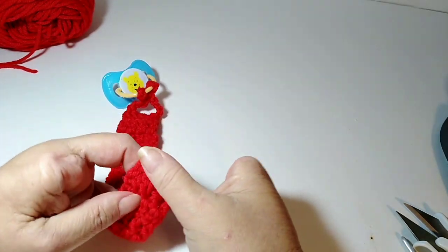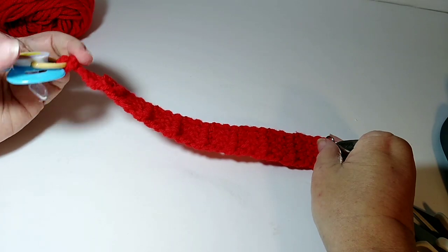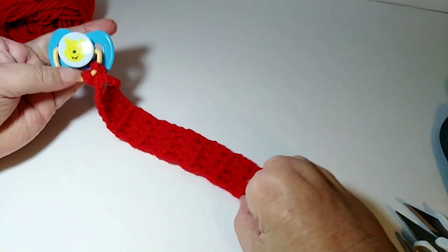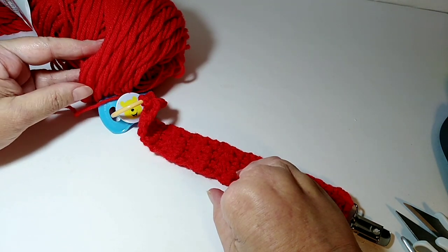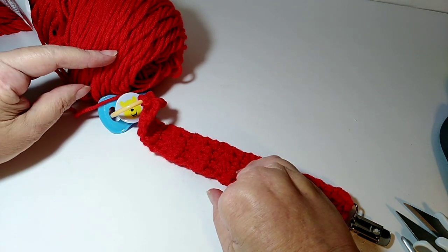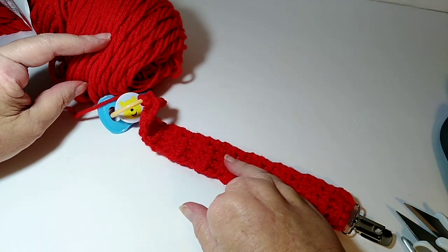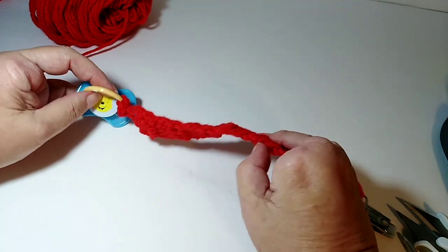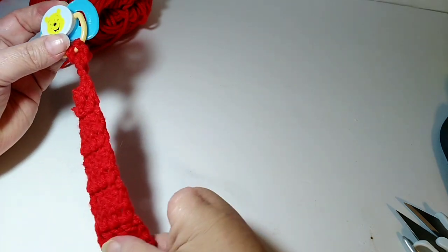It's a crochet passy clip. You can add your pacifier to it, whatever kind of pacifier you like to use. And I'm using a 4 weight yarn. You can use any color, variegated, whatever yarn you want to use. Alright, and here we go, let's get started on this tutorial.